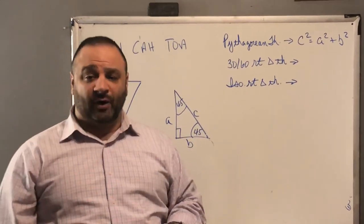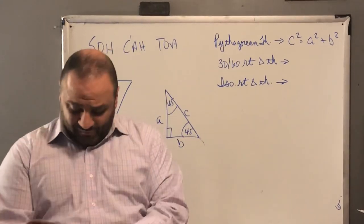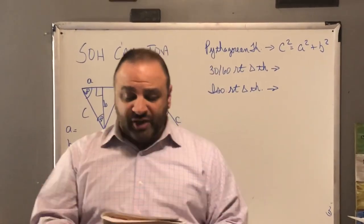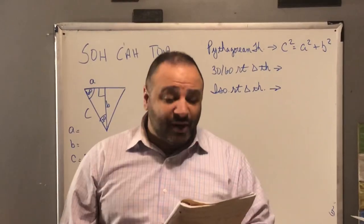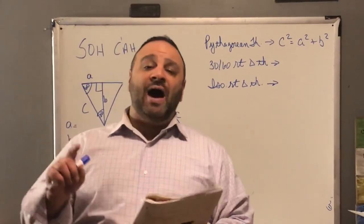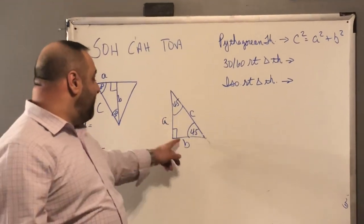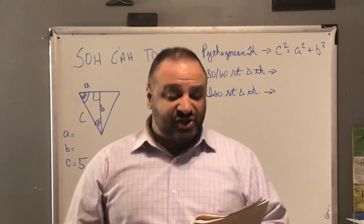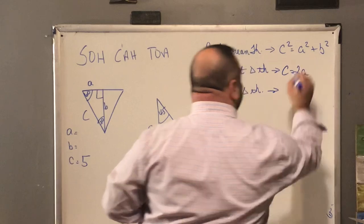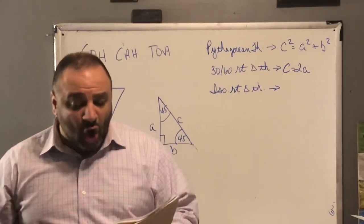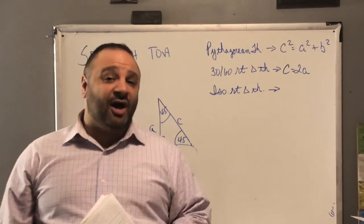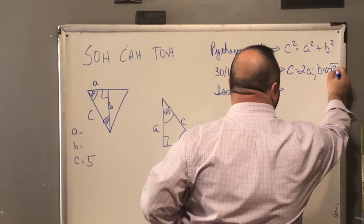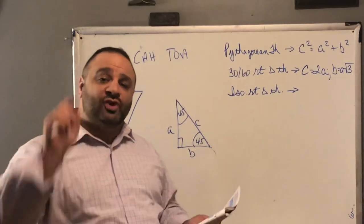Then we learned about the 30-60 right triangle theorem. You'll find that on page 23. Theorem 96 states: if the acute angles of a right triangle have the measures of 30 and 60 degrees, then the hypotenuse is twice as long as the shorter leg. C represents the hypotenuse, A the shorter leg, and B the longer leg. So the hypotenuse equals 2 times A, and the longer leg equals the square root of 3 times the length of the shorter leg. These must be memorized.